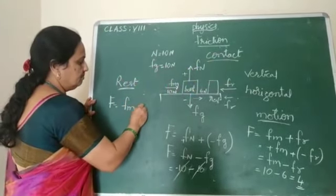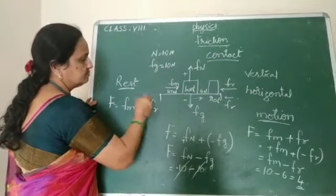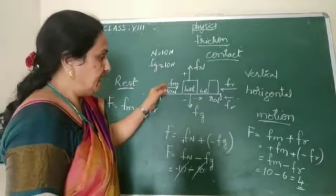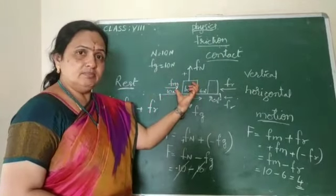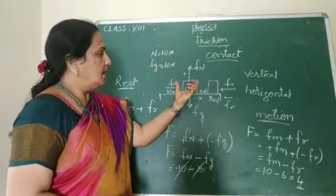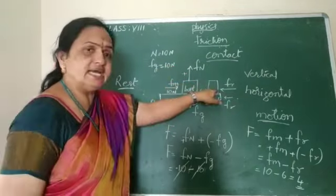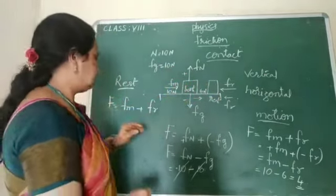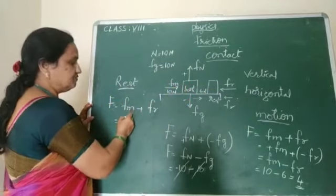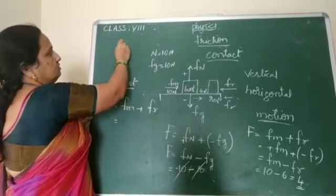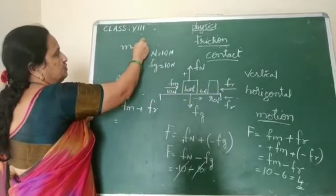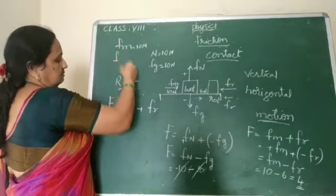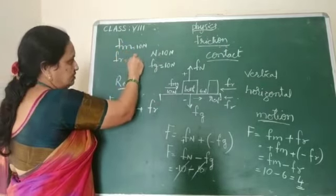The net force is FM plus FR. If they are acting in the opposite direction and have the same magnitude, then the object comes to rest. That means muscular force is 10 newtons and the frictional force is also 10 newtons.